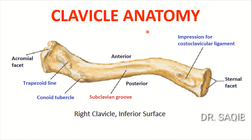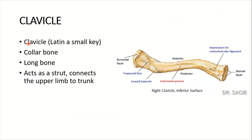The clavicle is also known as the collarbone and it lies horizontally — it's the only long bone that lies horizontally in the body. The word clavicle is derived from a Latin word meaning 'a small key.' It is a long bone that acts as a strut, connecting the upper limb to the trunk.